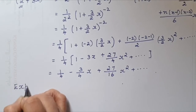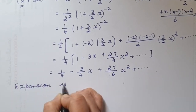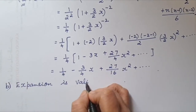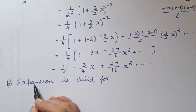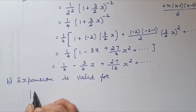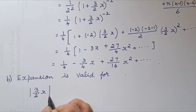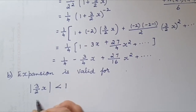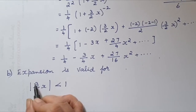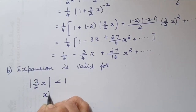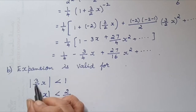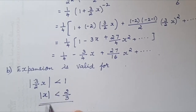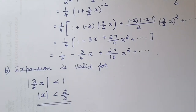For part B, the expansion is valid when the modulus of the term inside the bracket is less than 1: |3x/2| < 1. Cross-multiplying gives |x| < 2/3. So the expansion is valid for |x| < 2/3. This is how we apply the binomial expansion for all rational powers.